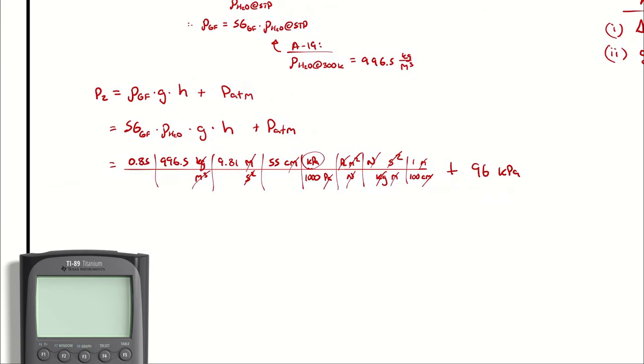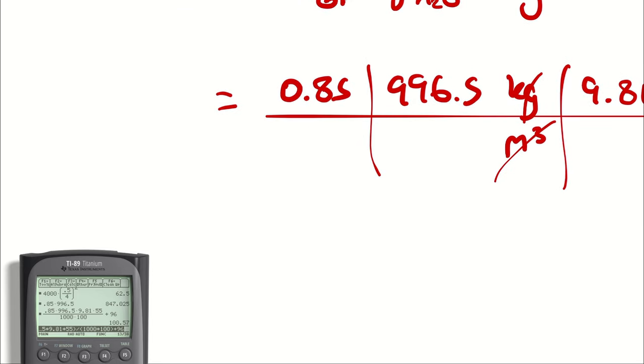I will summon our calculator. We are multiplying by 100 centimeters, not 1,000. And we get 100.57 as our answer.